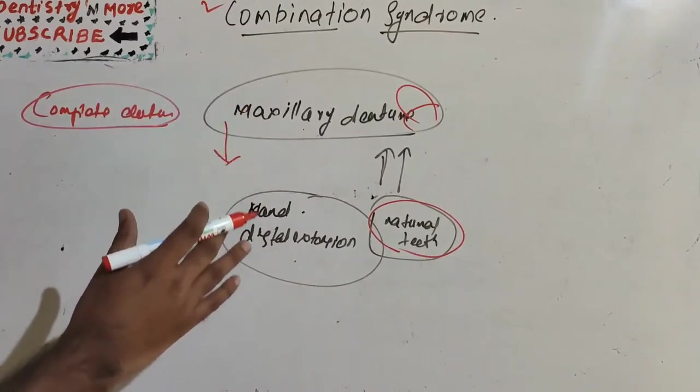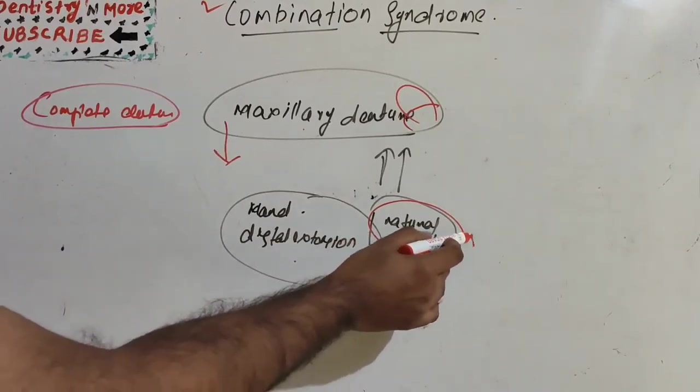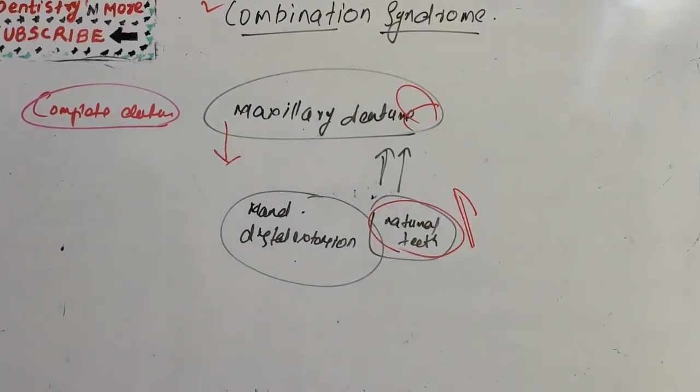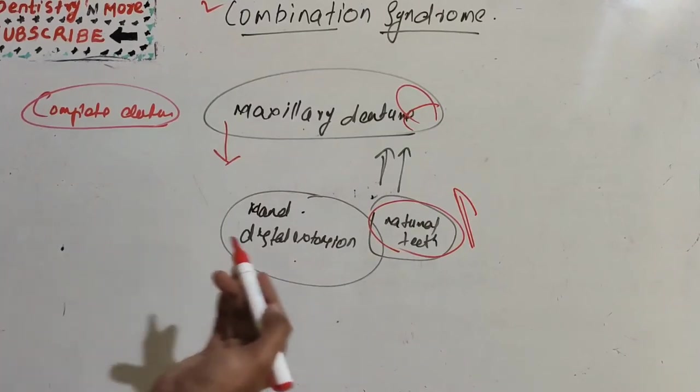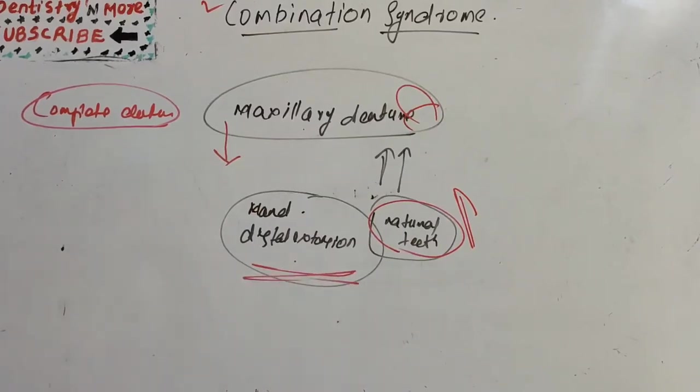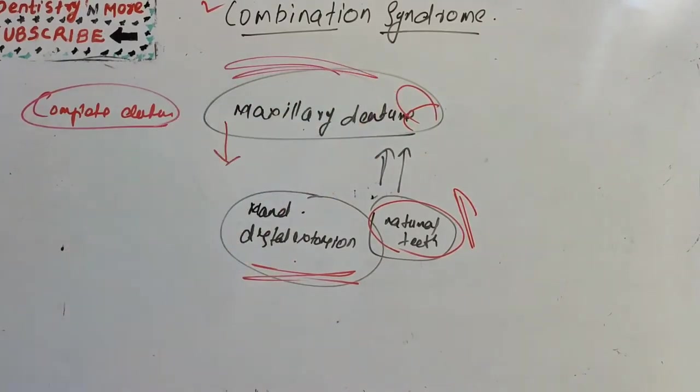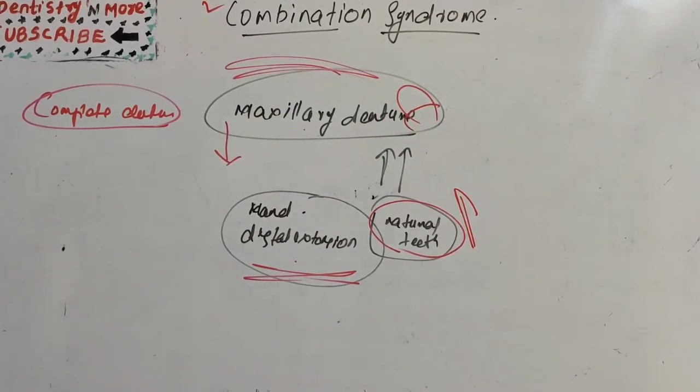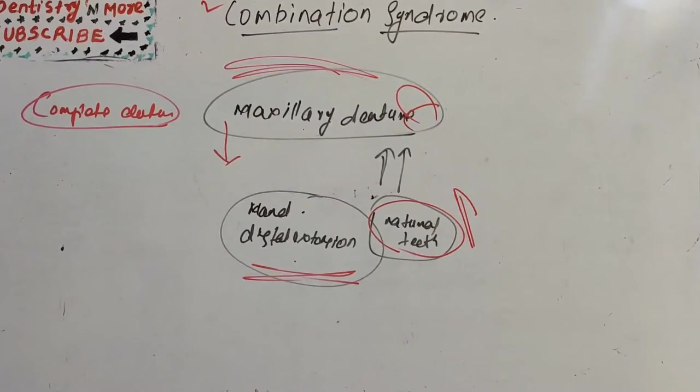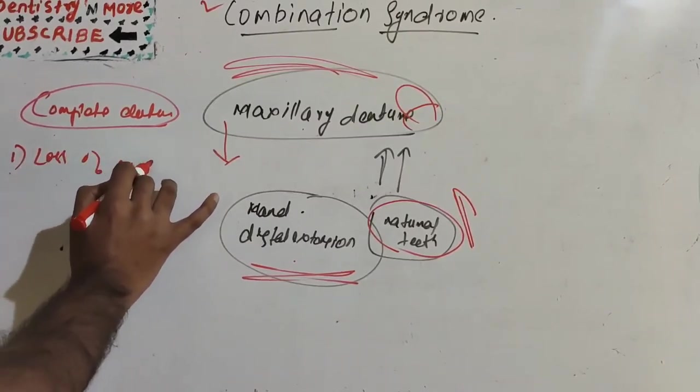Then extrusion of the lower anterior teeth occurs, so these lower anterior teeth will be extruded. And loss of bone beneath the removable partial denture base. So we can say there are six changes happening: one is loss of vertical dimension.